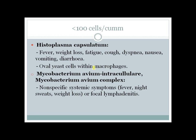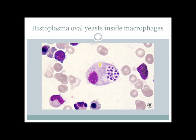Other infections in severely immunocompromised patients include Histoplasma capsulatum, presenting with fever, weight loss, fatigue, cough, dyspnea, and nausea. Biopsy or smear will show oval yeast cells within macrophages. Patients can also get infected with Mycobacterium avium-intracellulare complex (MAC), presenting with non-specific systemic symptoms like fever, night sweats, and weight loss — similar to TB or lymphoma — and can also present with focal lymphadenitis. Here you can see a smear showing multiple oval yeast cells inside macrophages — these are Histoplasma oval yeasts inside macrophages.